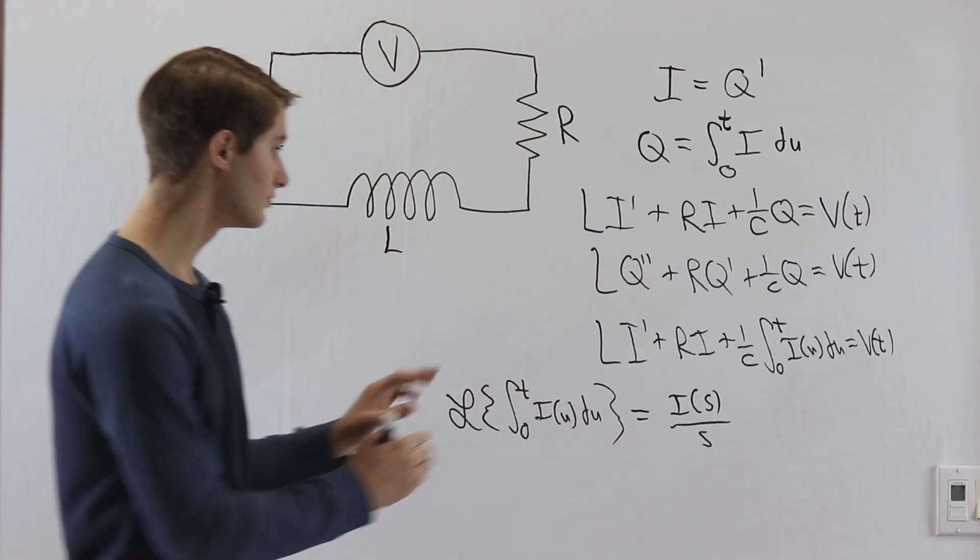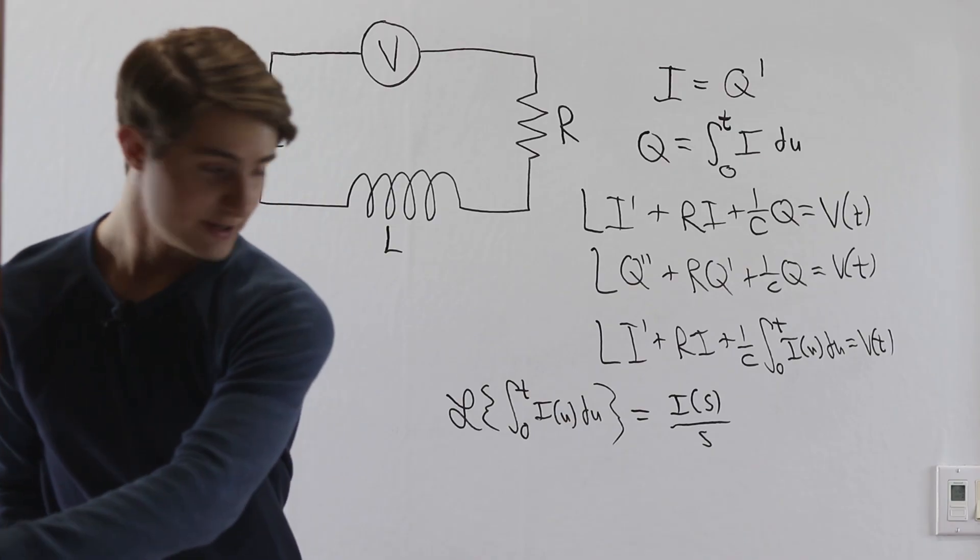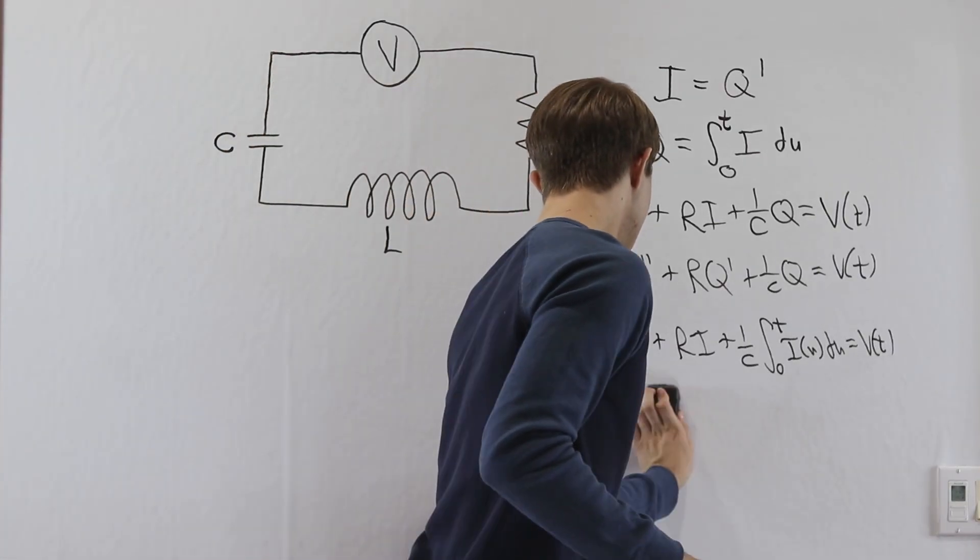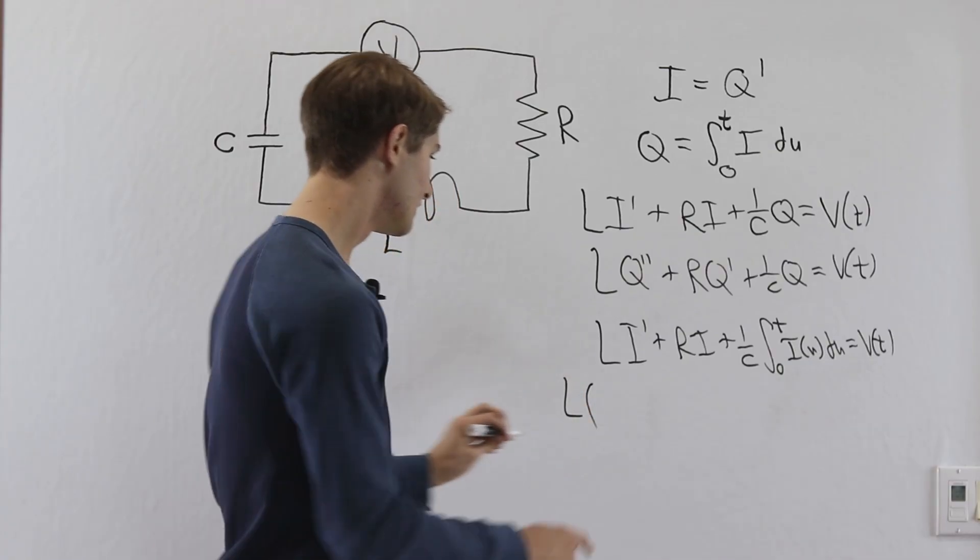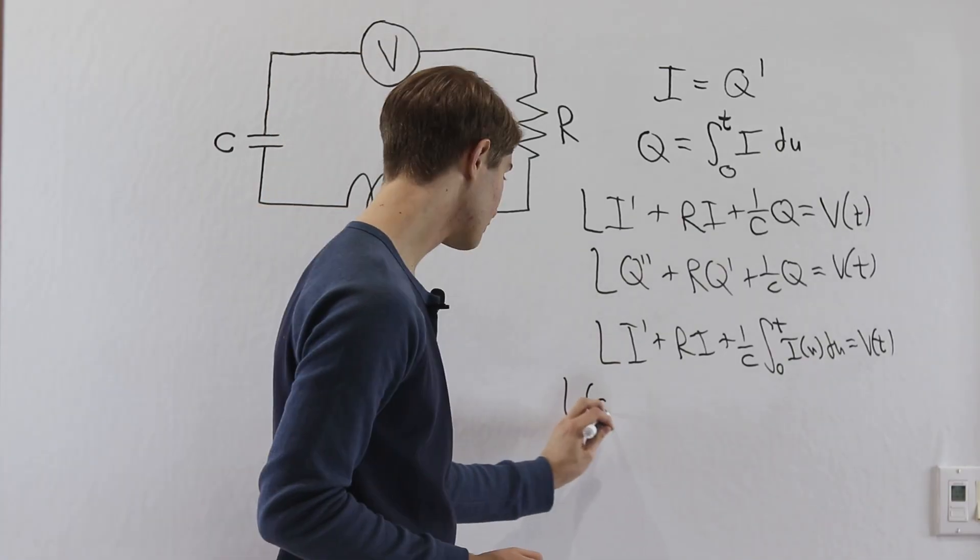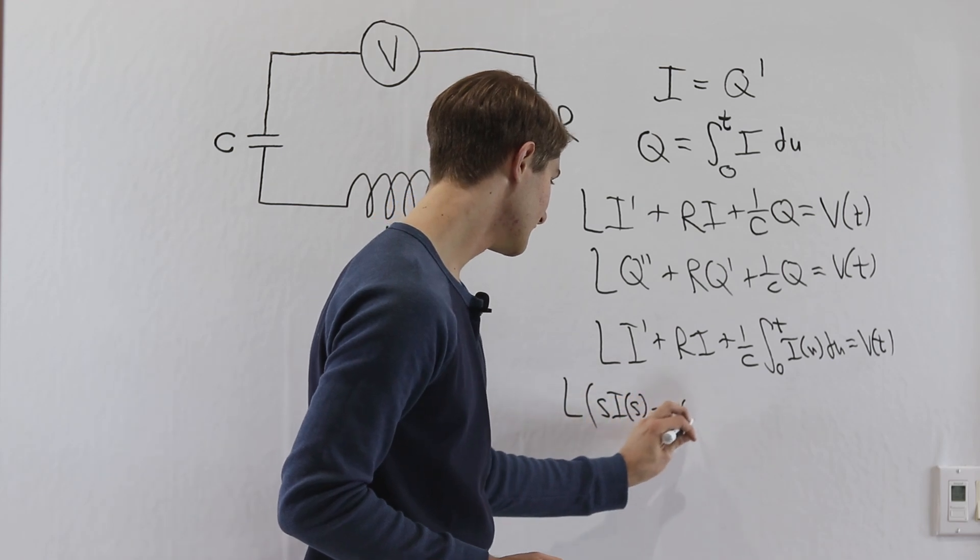So we can actually go through the Laplace transform of this entire equation here, and I'll actually write it down here. We take the Laplace transform of the left side. We're going to get L times, well the Laplace transform of i prime is s times i of s minus i of 0.